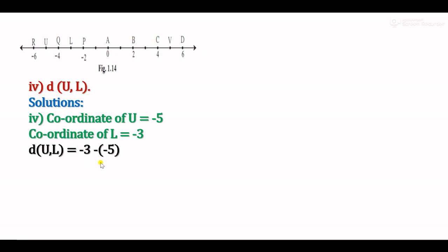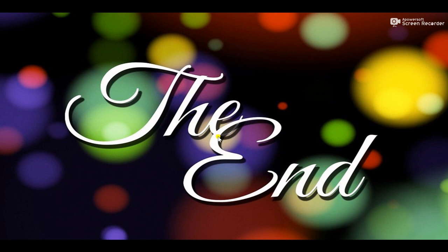Distance UL: coordinate of U is minus 3 and coordinate of L is minus 5. The larger minus the smaller: minus 3 minus (minus 5) equals minus 3 plus 5 equals 2 units. So UL equals 2 units. In this way, all examples in Practice Set 1.2 have been solved. See you in the next video. Bye bye, take care.